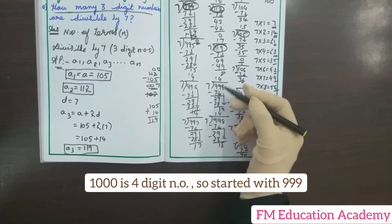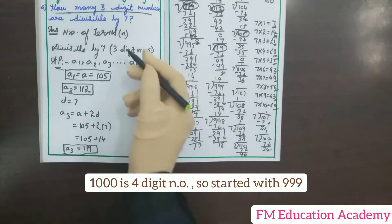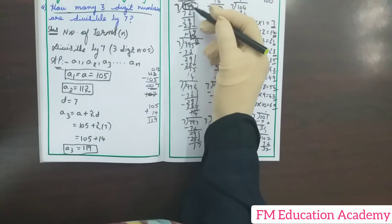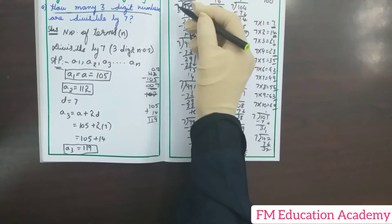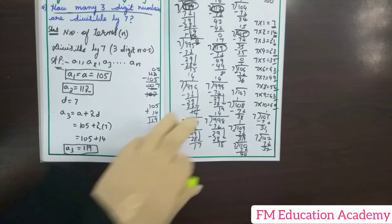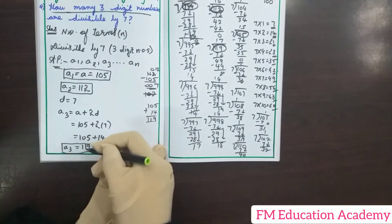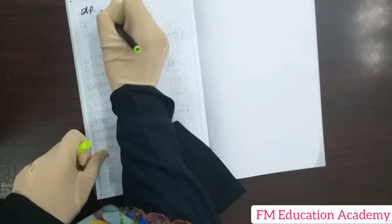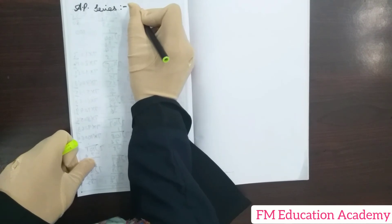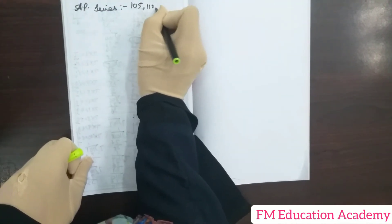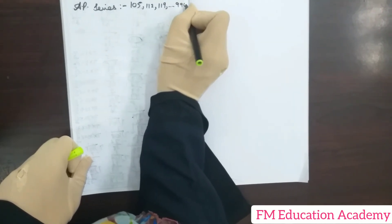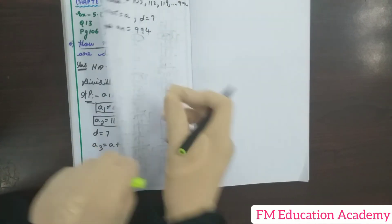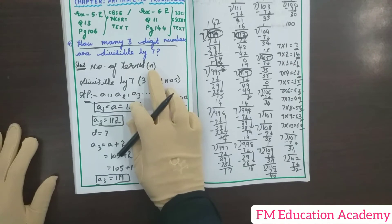Since 999 is the largest three-digit number and 1000 is a four-digit number, I need three-digit numbers only. The last term is 994. So the AP series is: 105, 112, 119, …, 994. Here the first term A = 105, common difference D = 7, and last term Aₙ = 994. The question asks me to find the number of terms N which are three-digit numbers divisible by 7.